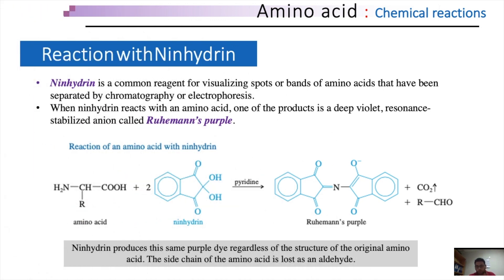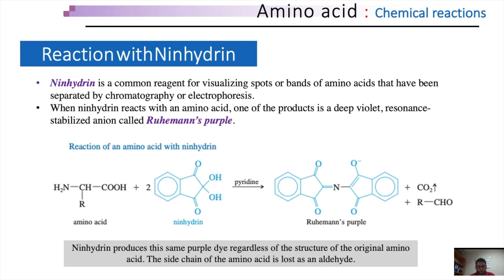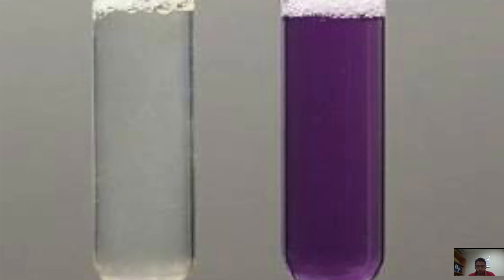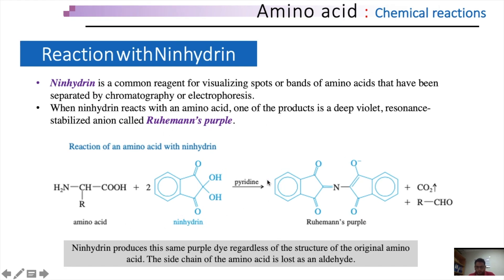Next, we are going to discuss the reactions of amino acids with ninhydrin. Ninhydrin is a common reagent for visualizing spots or bands of amino acids that have been separated by chromatography or electrophoresis. When ninhydrin reacts with an amino acid, one of the products is a deep violet resonance-stabilized anion called Ruhemann's purple. Ninhydrin produces this same purple dye for all amino acids regardless of their structure. The reaction is shown in this figure, where an amino acid reacts with ninhydrin in the presence of pyridine, resulting in the formation of Ruhemann's purple and an aldehyde.